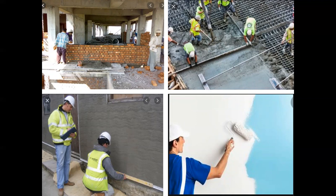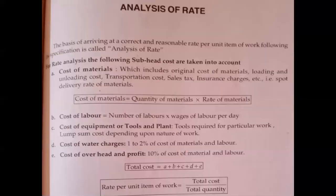So, to sum up, to complete any kind of work — for any unit item of work, that means for one cubic meter of work or one square meter of plastering or painting work — there has to be some set rate fixed. How to fix the rate? Depending on the quantity of materials, quantity of labors, and time required to complete the work. This rate analysis gives the correct and reasonable rate per unit item of work following its specification. That is the definition of rate analysis.